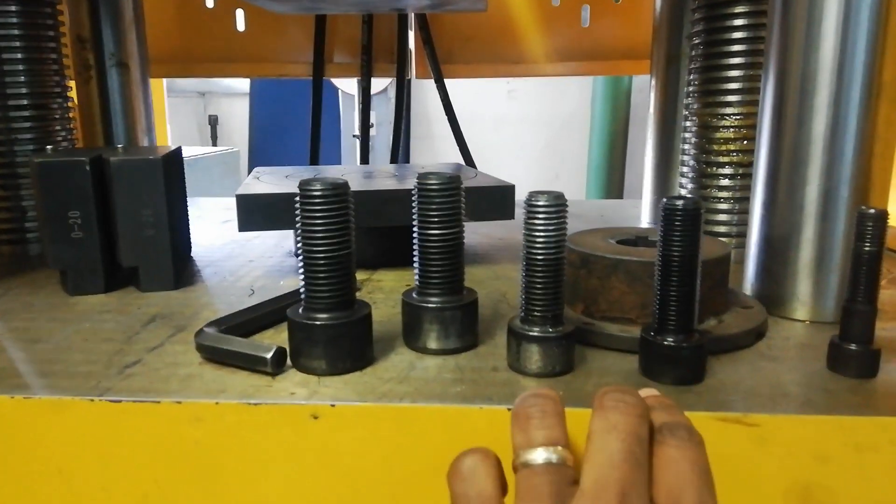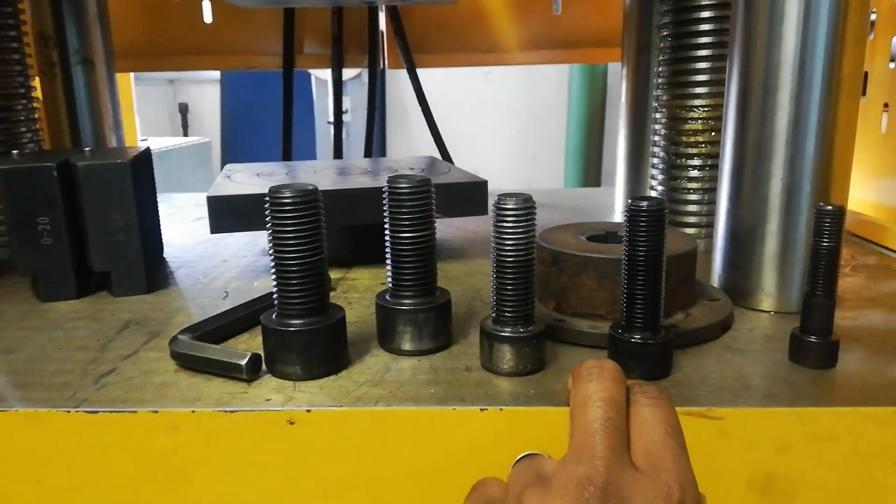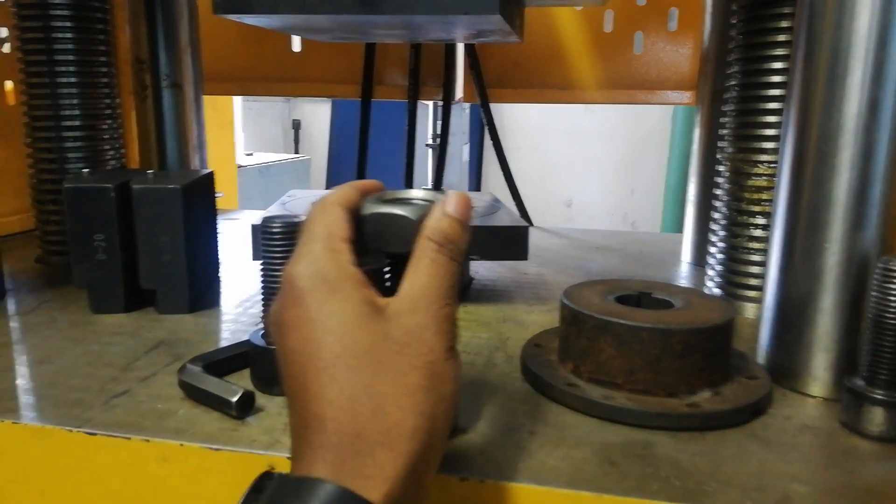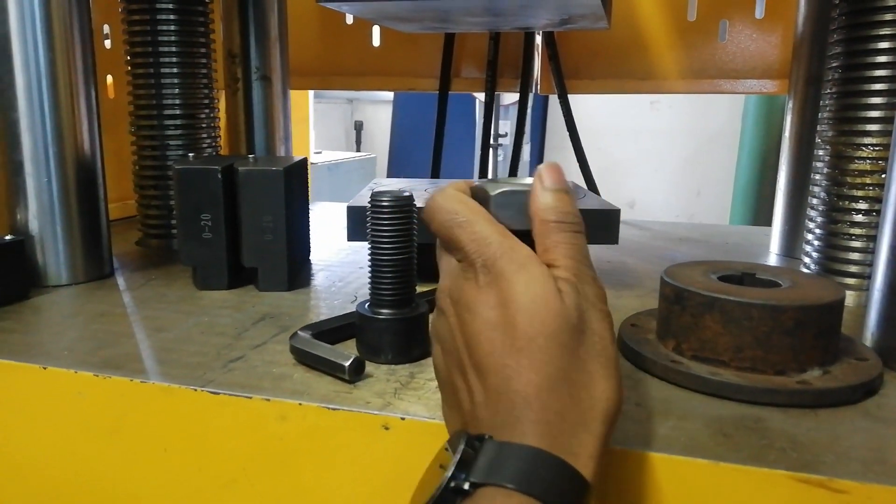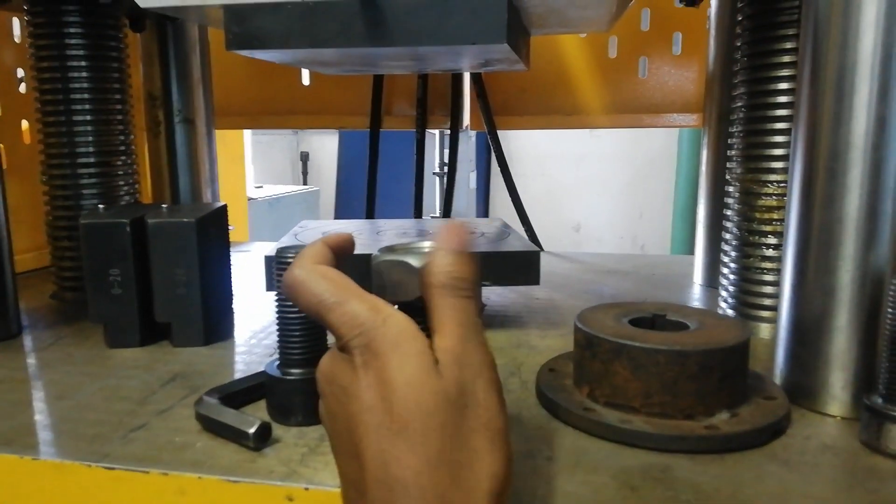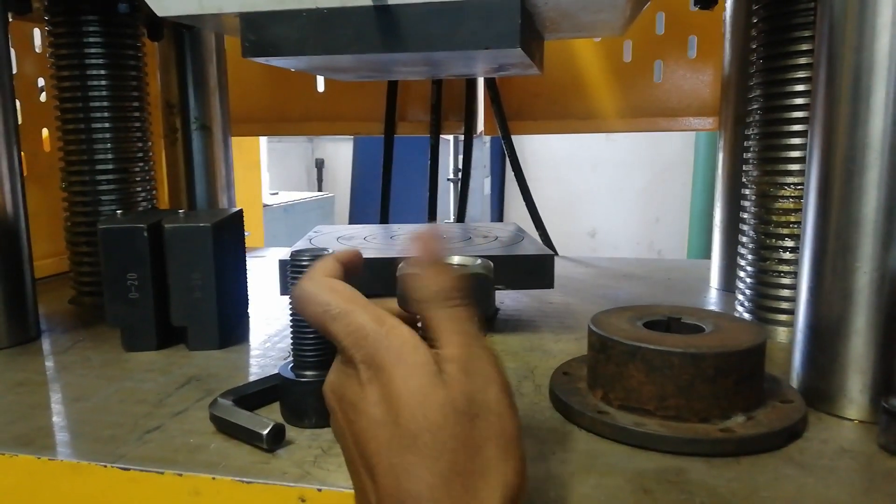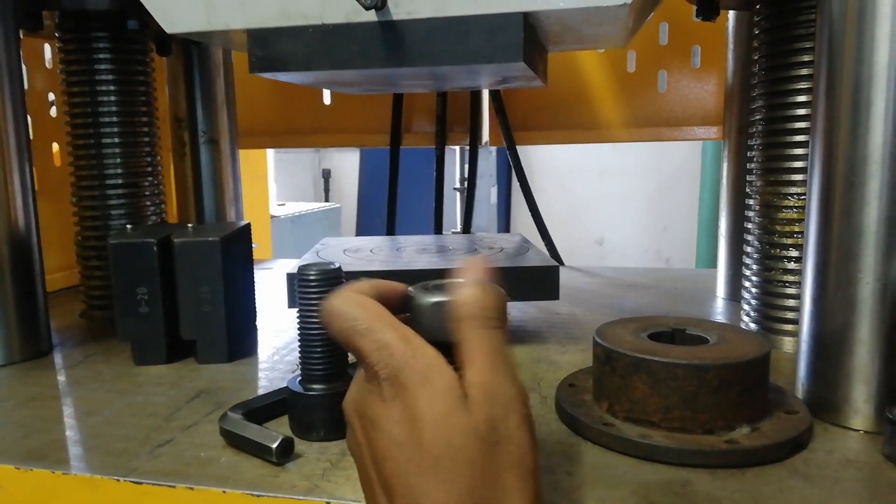The way the test is performed is by assembling the nut to the mandrel or the bolt. Once this assembly is together, what we need to do is apply either a pulling force or pressure trying to separate the two from each other.